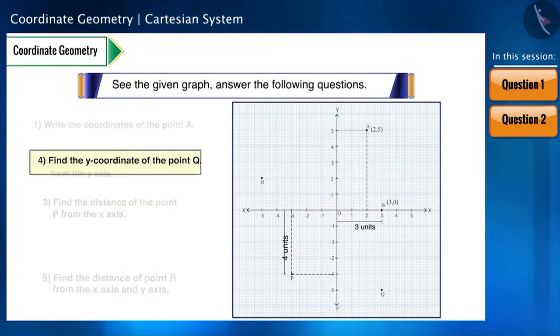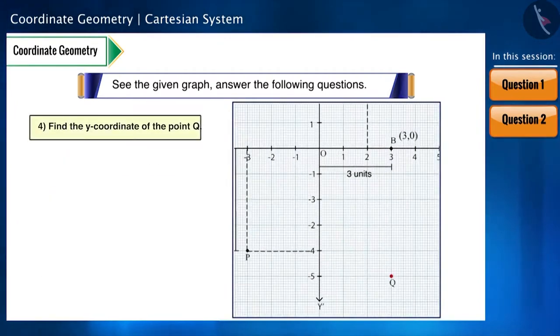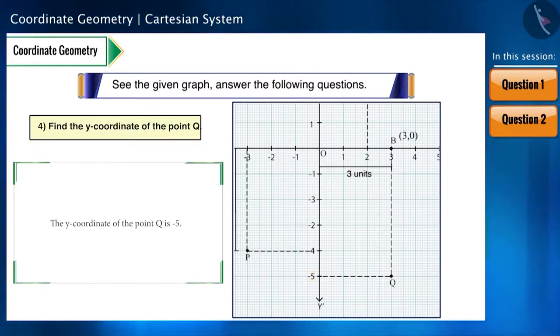Now let's take the fourth sub-question. Find the Y coordinate of the point Q. This is a simple question. If we have to find the Y coordinate, we will draw a line parallel to the X axis from this point, which will intersect the Y axis at minus 5. So the Y coordinate of the point Q is minus 5.